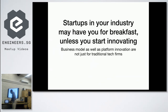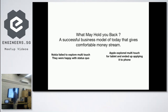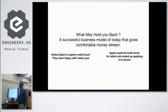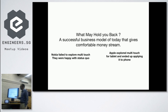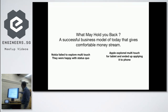What typically holds people or companies back when trying to innovate is an existing well-performing business model that gives you a good stream of money today. Nokia, for example, was very happy with their business model and the money it brought them — they were content with the status quo and not exploring what else could be done. Apple, on the other hand, was exploring a lot of different ideas, one of them being multi-touch.